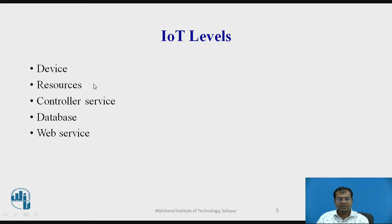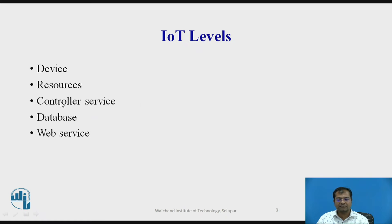The second term is resource. The resources used in IoT levels include software, actuators which are going to control, and network access, etc. Next comes the controller service. This runs on the device and interacts with the web servers, acting as an interface between the device and the internet.